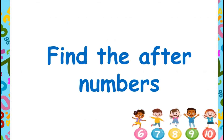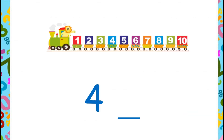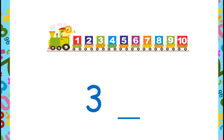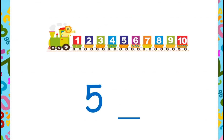Let's find the after numbers. What is the after number of 4? As 5 comes next, the after number of 4 is 5. What is the after number of 2? Yes, 3 is the after number of 2, as 3 comes next. What is the after number of 3? Yes, the after number of 3 is 4.